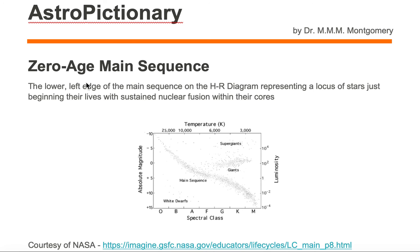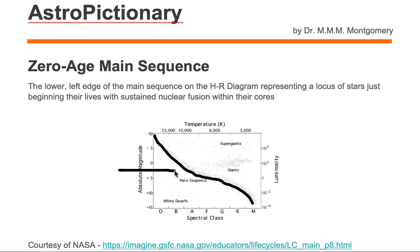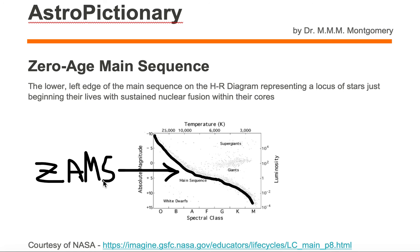What we mean by the lower left edge of the main sequence is this bottom portion of the main sequence. So those stars — the locus of stars — sitting on the very lower left edge of the main sequence are what we call ZAMS, or ZAM stars.